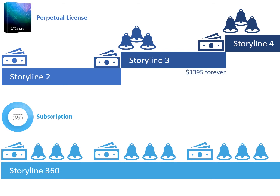The perpetual license for Storyline 3 is $13.95 and you can use it for as long as you want. Typically when there's an upgrade the cost is about 50% of the full price, so about $700. The Storyline 360 subscription is $995 for the year. When it comes time to renew we don't actually know if it will be the same price or not. Since the subscription model is less than a year old, we don't know if they'll offer any discounts for renewals.